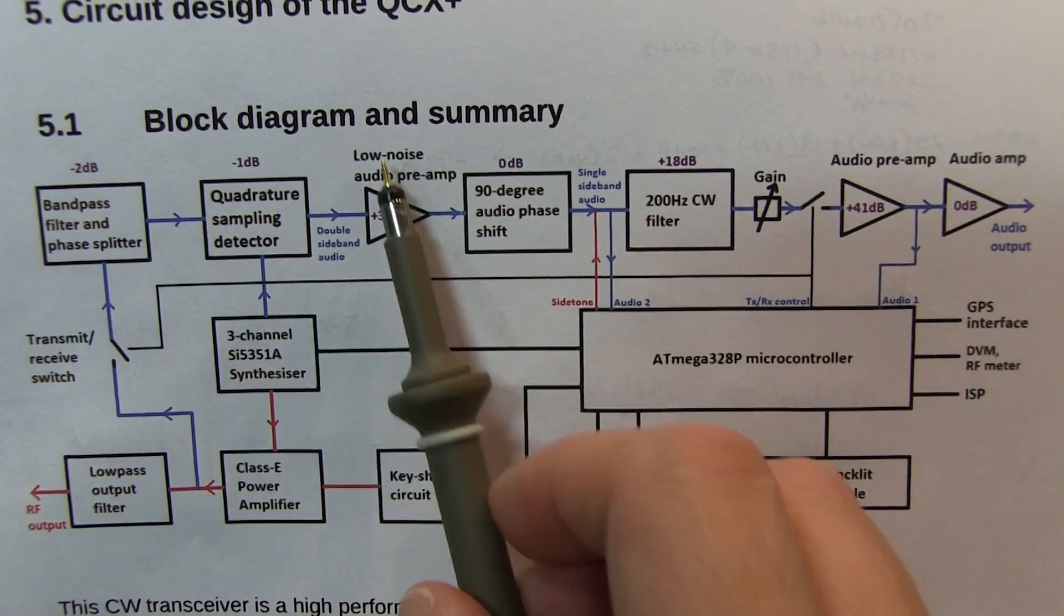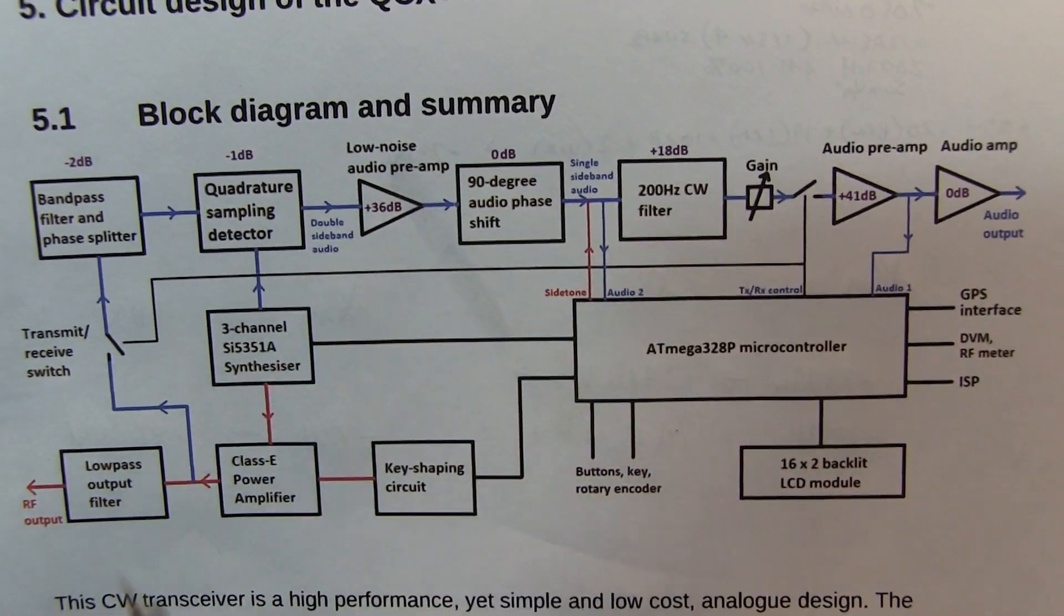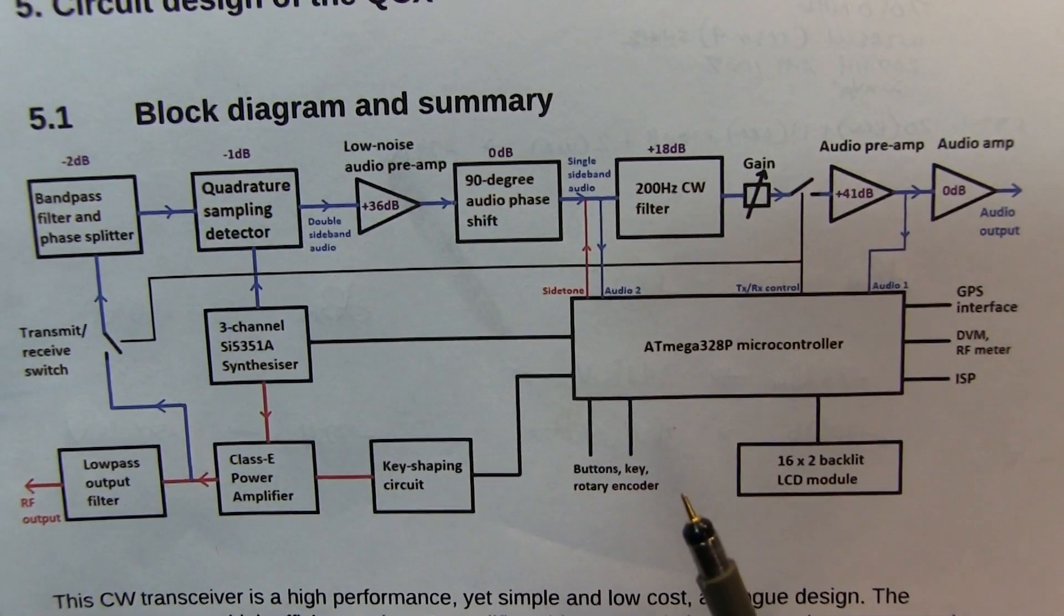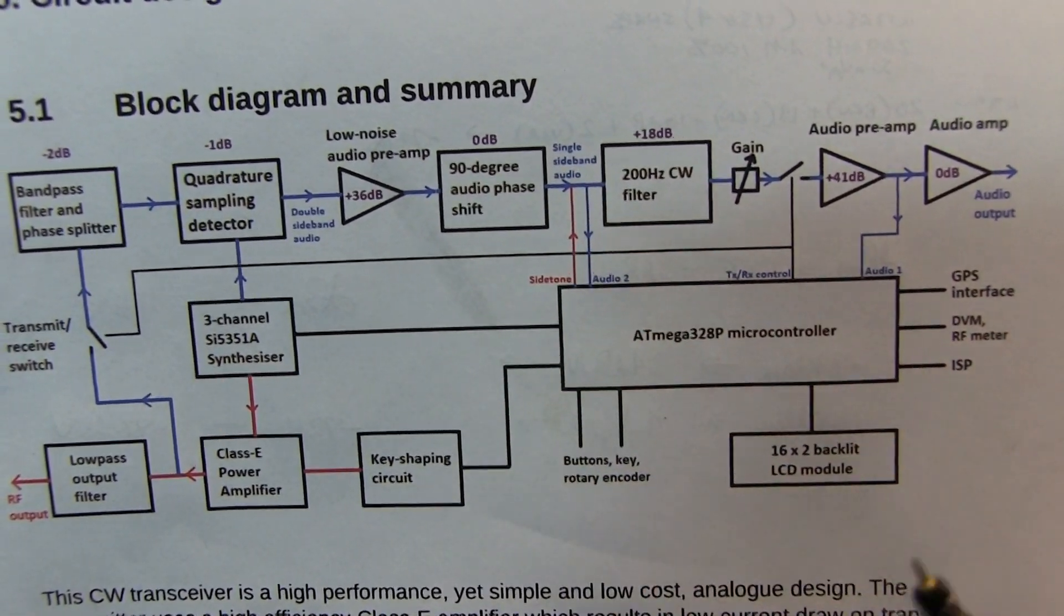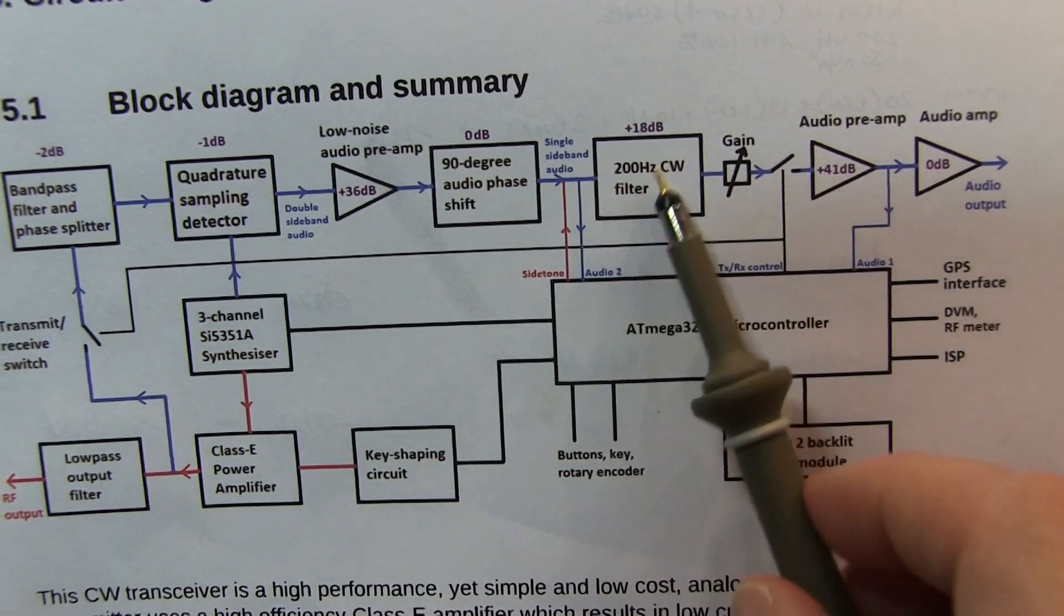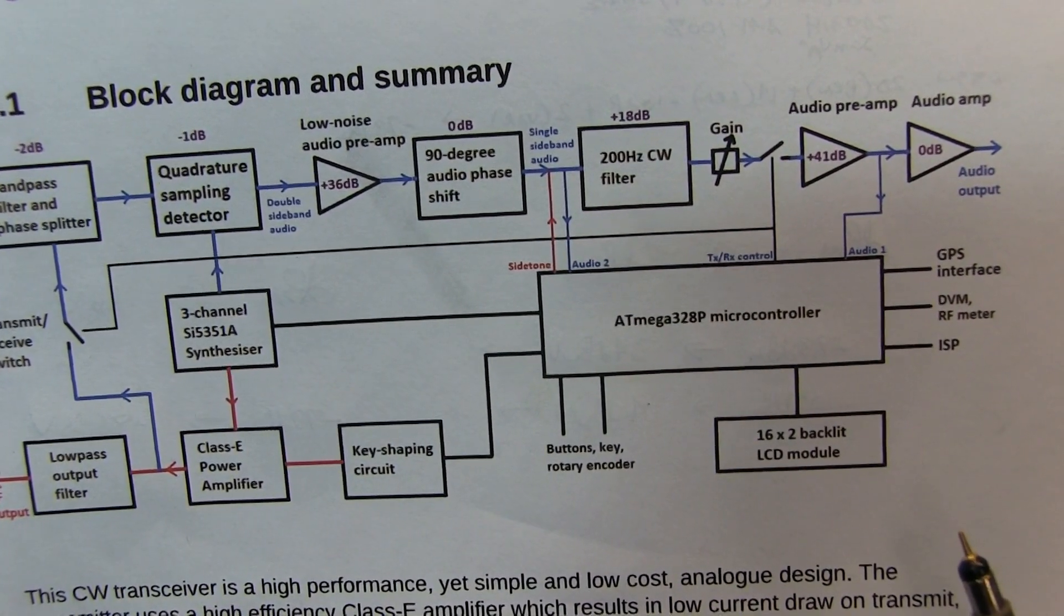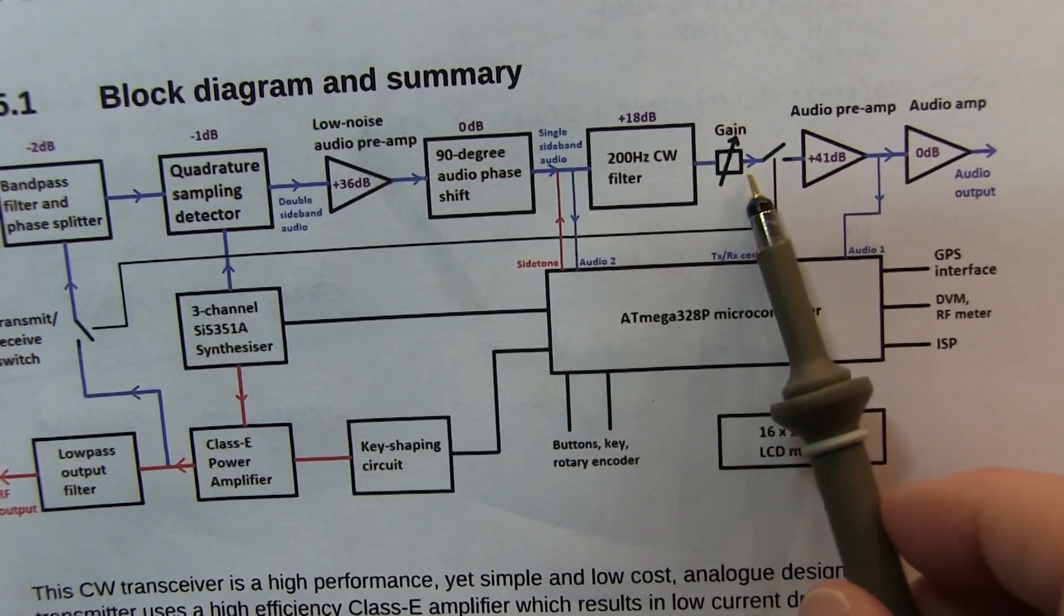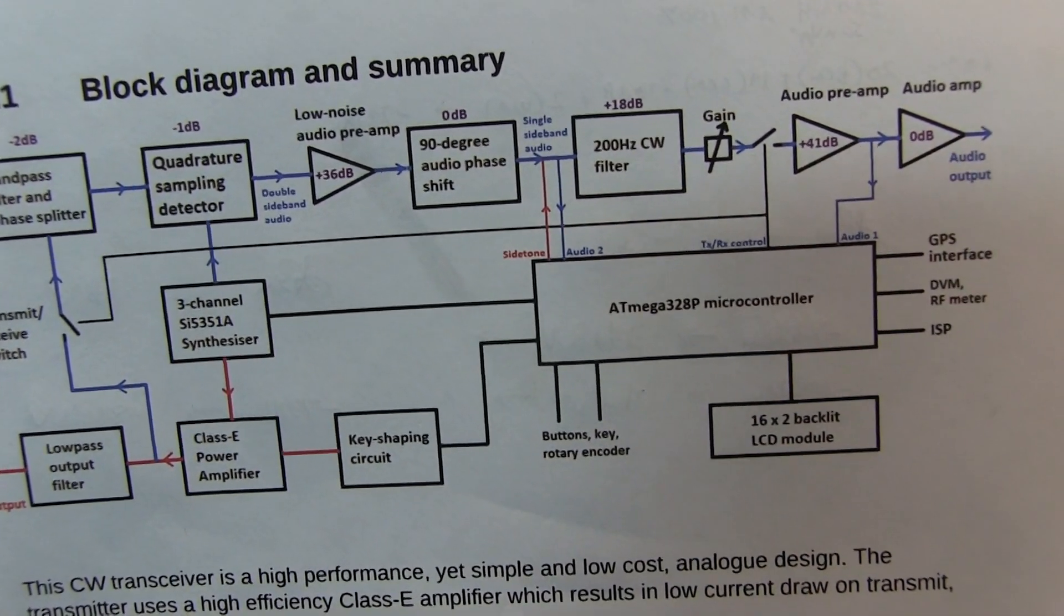And then we've got a preamp. That's actually a pair of preamps because we've got that applied to both the I and the Q. And then we do a 90 degree phase shift to one of the paths so that when we sum them together we get single sideband output. That then goes through a 200 Hz audio filter, then we've got an adjustable level control before we go into the final audio amp.